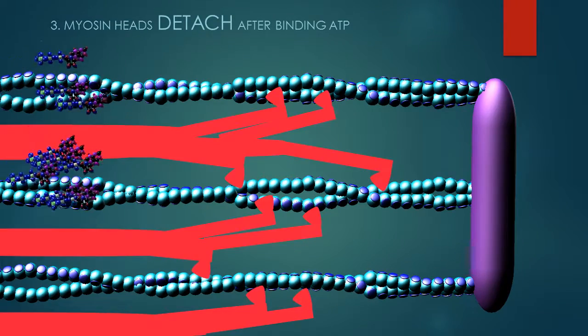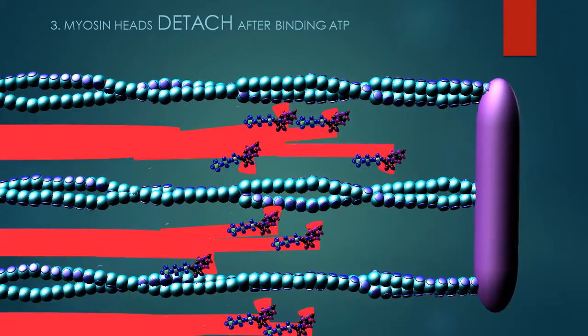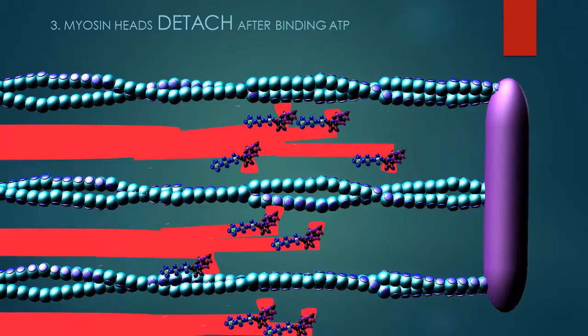Third, after binding ATP, the myosin heads will detach from actin.